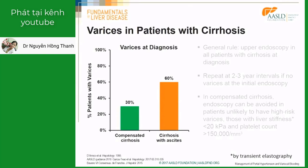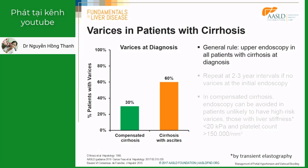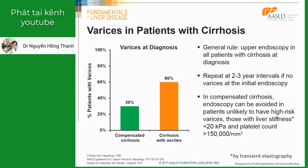The first step in preventing variceal bleeding is to identify those patients that have varices. In patients with compensated cirrhosis, about 30% of them have varices at the time of diagnosis, while patients with decompensated cirrhosis have varices in about 60% of the cases. As a general rule, an upper endoscopy should be done in every patient after the diagnosis of cirrhosis, and should be repeated at two to three-year intervals in those patients that do not have varices. However, in patients with compensated cirrhosis, the risk of finding high-risk varices is very low in those that have both a liver stiffness measurement of less than 20 kilopascals and a normal platelet count.